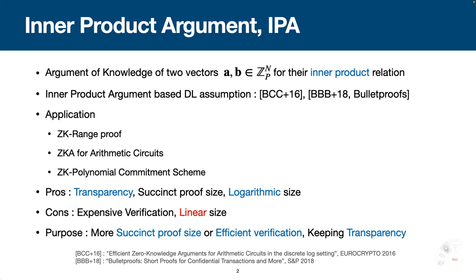Inner Product Argument is used in many applications: zero-knowledge range proof, zero-knowledge argument for arithmetic circuits, and zero-knowledge polynomial commitment scheme. The pros of Inner Product Argument are transparency — no trusted setup needed — and succinct proof size of logarithmic size.